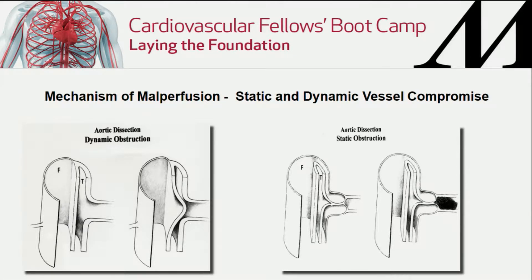Mechanisms of malperfusion: when we figure out why these patients are not getting end-organ perfusion, it can be from a dynamic or a static problem. Dynamic means that the flap of the dissection is ball-valving and closing over the origin of the vessel needing to be perfused. A static obstruction means the dissection goes into the vessel origins and can cause a stenosis or complete occlusion with thrombus formation. Dynamic obstruction is treated by increasing pressure and flow into the true lumen; static obstruction also requires dealing with the vessel origins — stenting or cleaning them out.